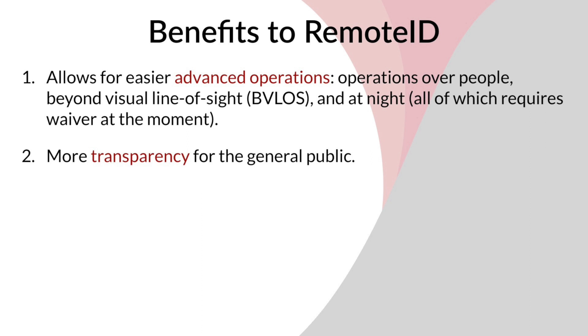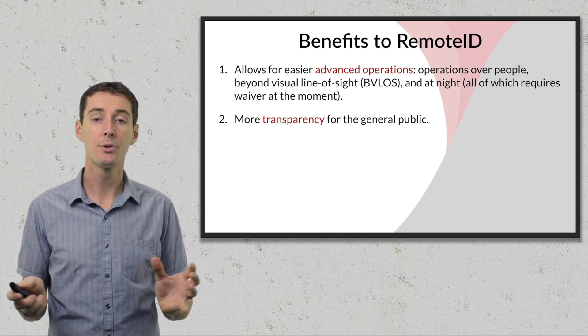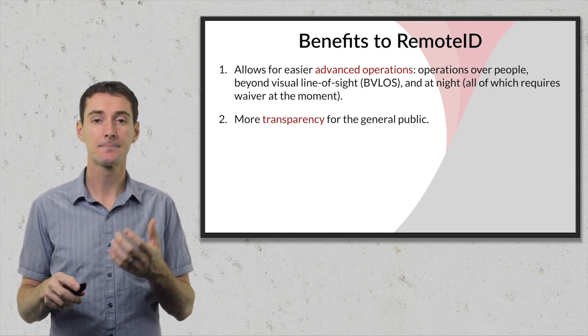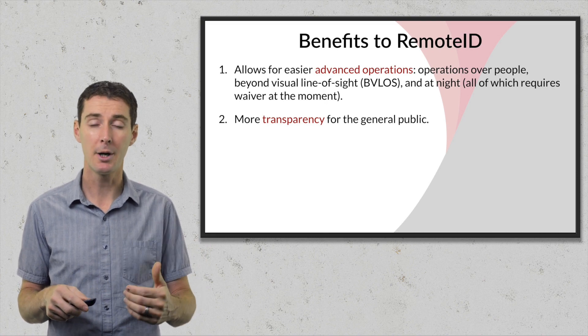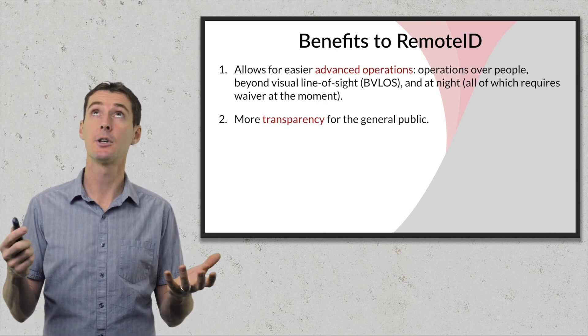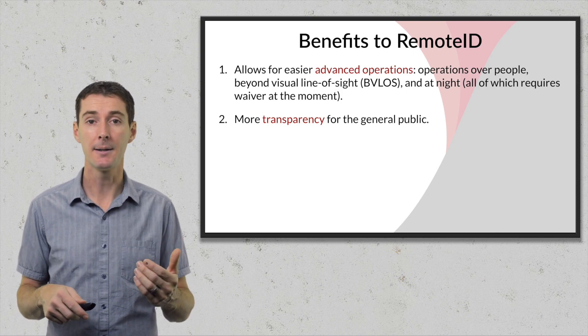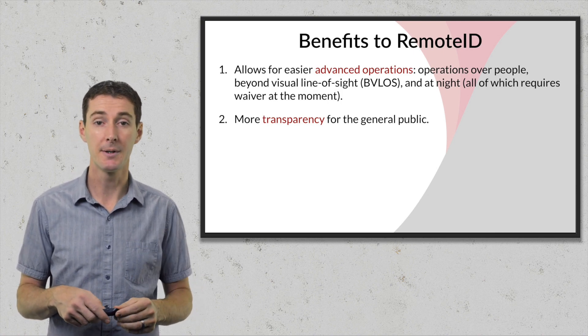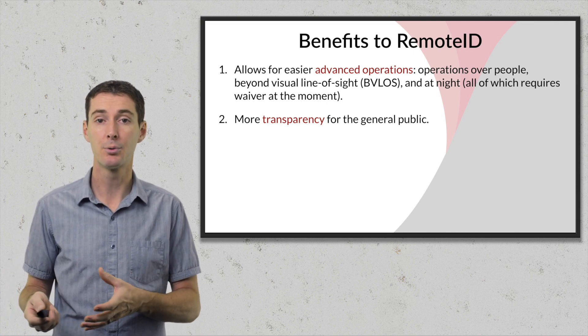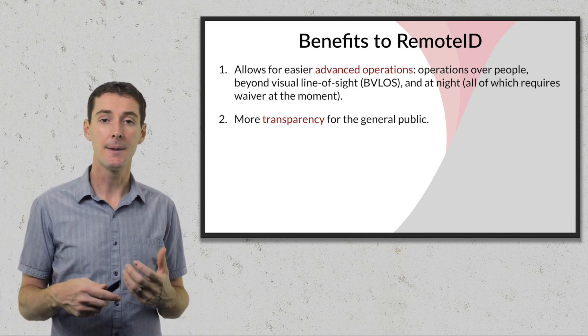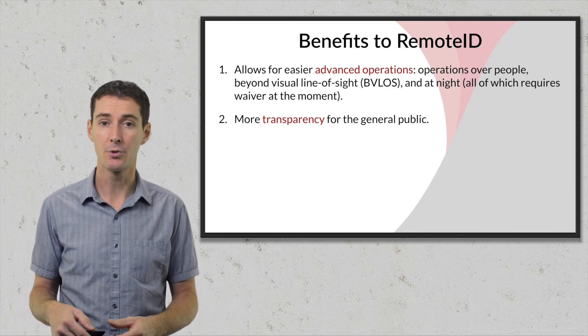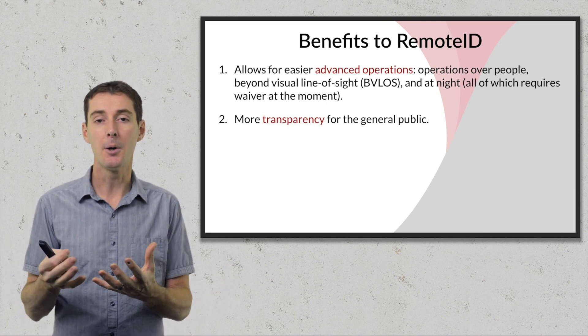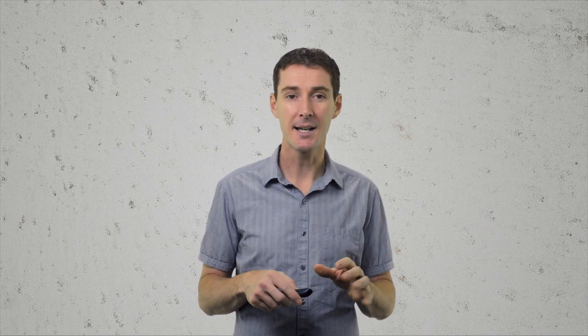The second benefit is more transparency to the general public. Those pushing Remote ID argue that if this information is available publicly, people can look up and see 'that's an Amazon drone doing a delivery' or 'that's a local pilot on an approved flight.' Once people have access to that information, they'll be less likely to question what a drone is doing, making drones more mainstream. I'm still on the fence about this argument.